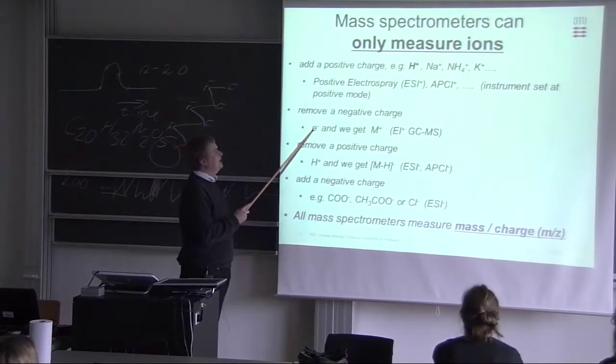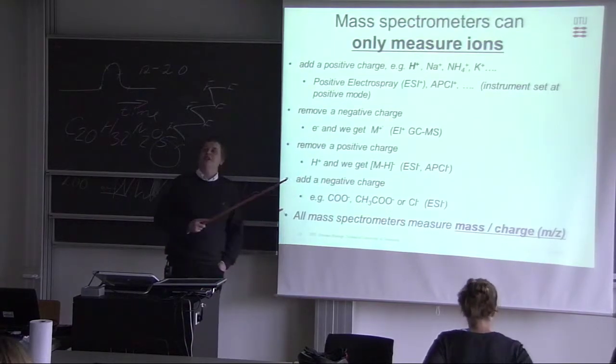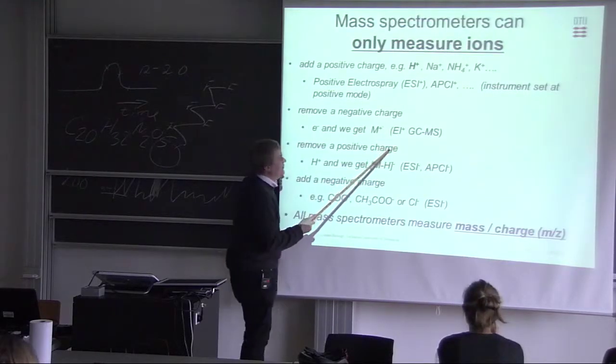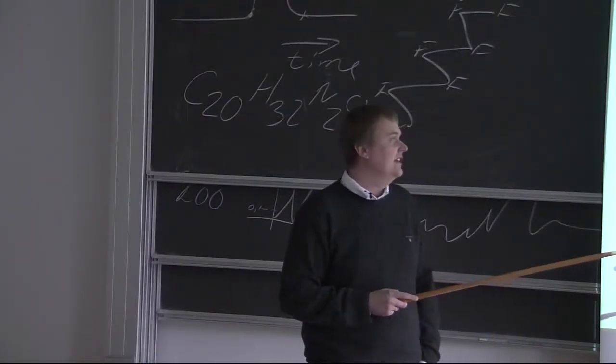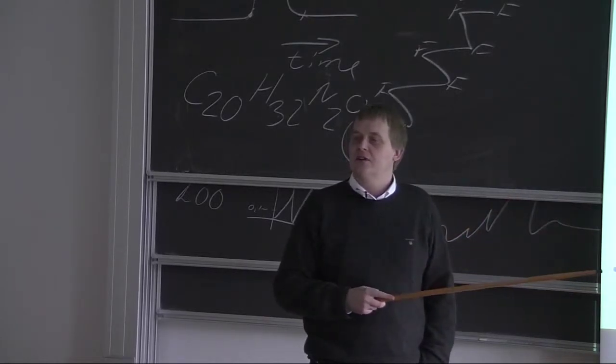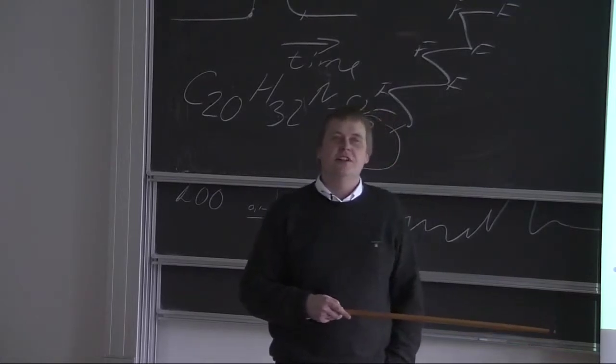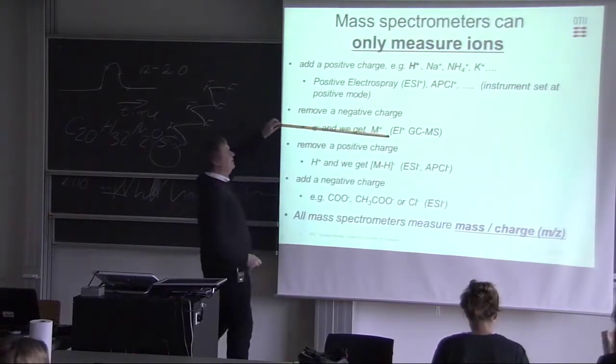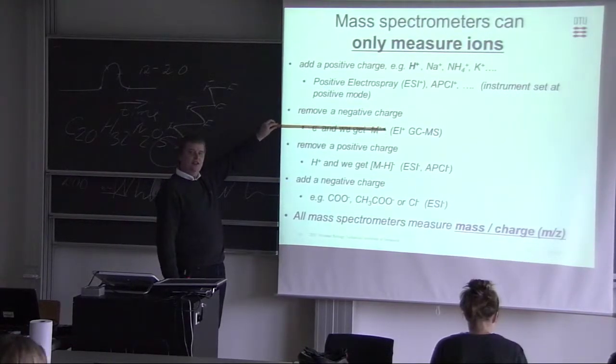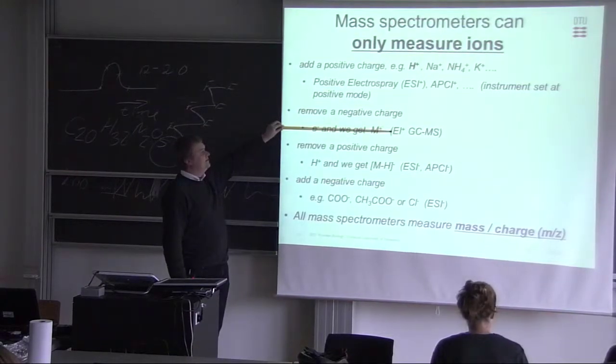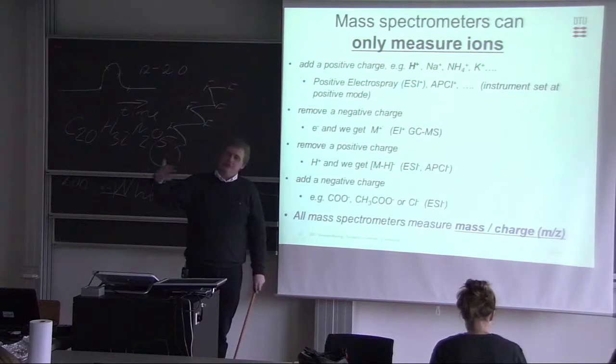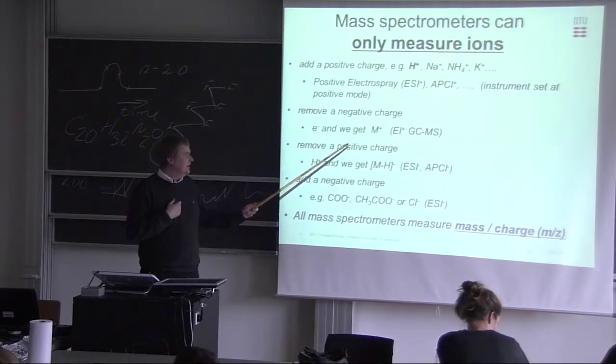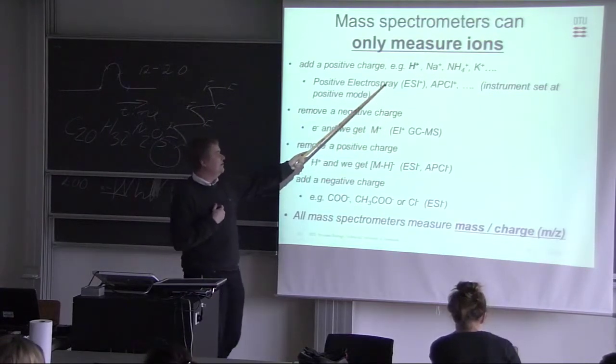So you will work a lot with electrospray, so you will probably also mainly work with positive electrospray. And we'll see if we can add a positive charge. This could be a proton, but it could also be a sodium or ammonium or potassium. So here we have a neutral molecule and we add a charge. Then the whole trick is then putting a charge on and getting it into the instrument, which is a high vacuum system. We could also remove a negative charge. So we have a neutral molecule and we take off an electron. We have a positively charged ion.